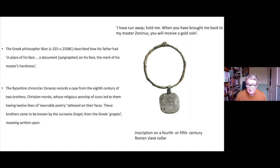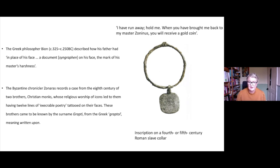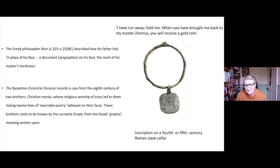Penal stigmatisation was intentionally visible — a public form of inscription designed to humiliate and shame. The Greek philosopher Bion described how his father had, in place of his face, a document — the mark of his master's harshness. This bodily inscription turned the stigmatised person into, as one Roman emperor put it, the image of his own penalty. It was particularly associated with attempts to escape enslavement. In some cases, slaves who had previously tried to escape would be collared rather than tattooed — iron neck rings riveted in place, inscribed with the owner's name, status, occupation, and the address to which the enslaved person should be returned. Several Roman slave collars found in funerary contexts suggest that for some this metal neck collar was permanent, worn for life.